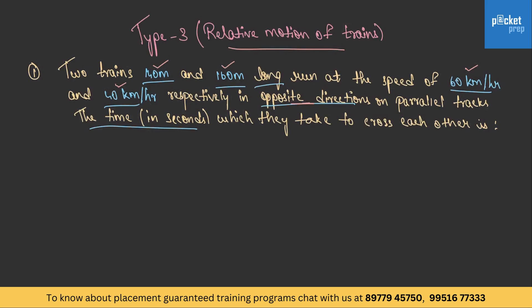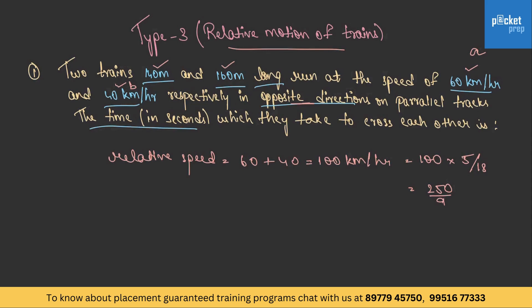As they are moving in opposite directions, relative speed = 60 + 40 = 100 km per hour. Converting to m/s: 100 × 5/18 = 250/9 meters per second. The total distance is 140 + 160 = 300 meters, since the total distance is always L plus B.